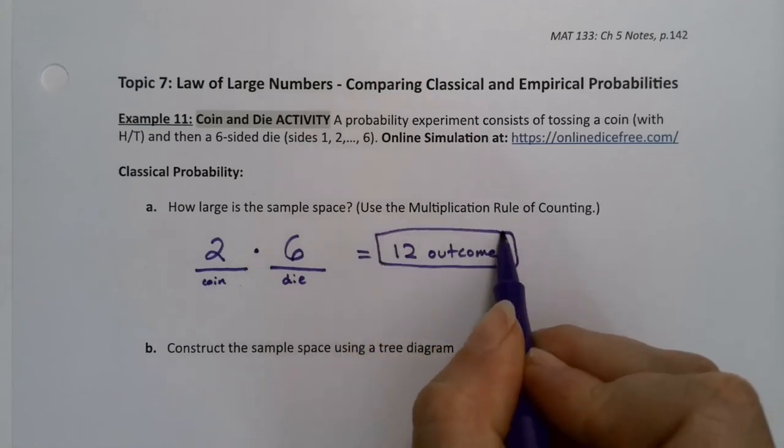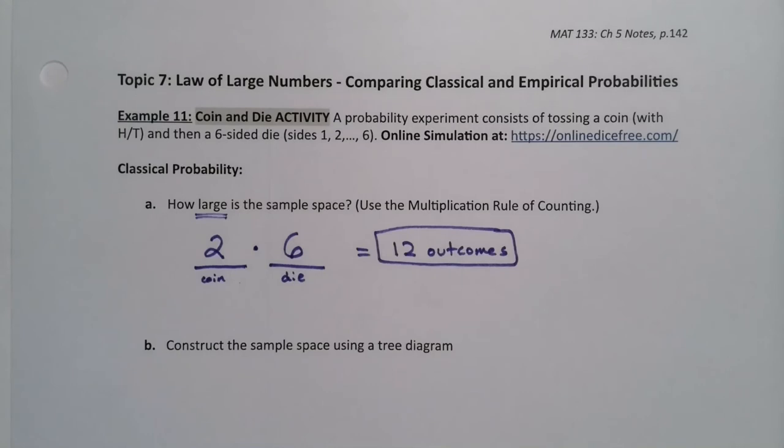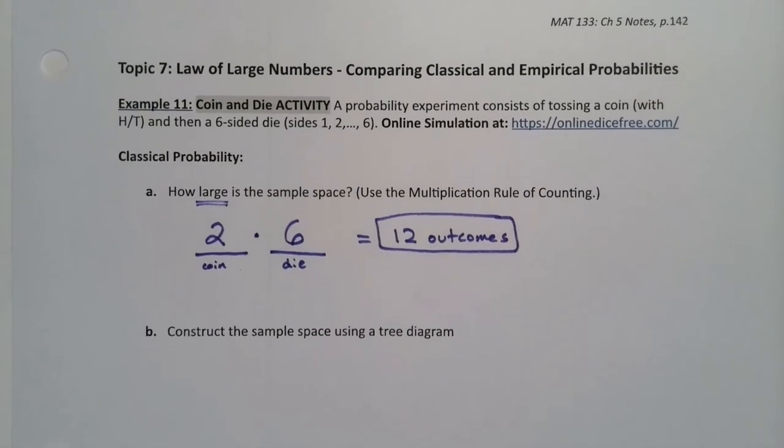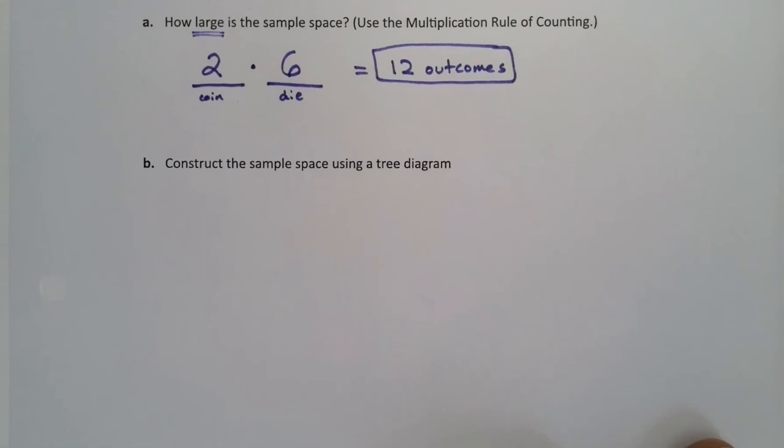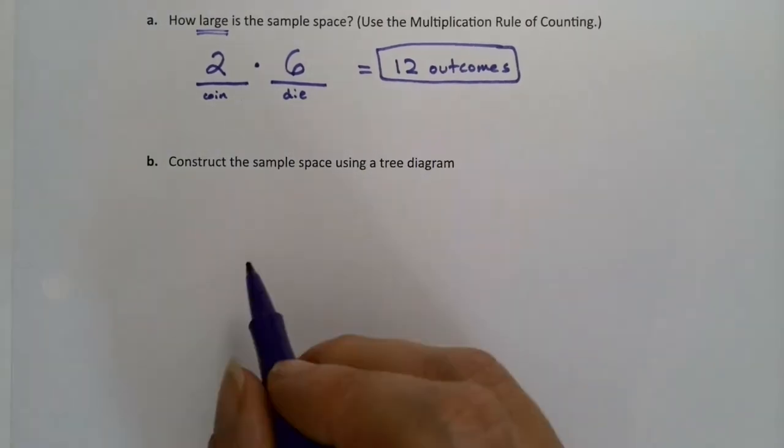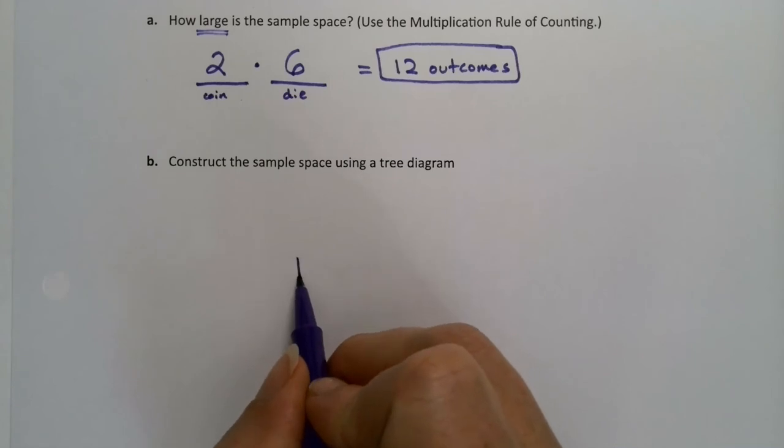That is the size of the sample space. How large is the sample space, which they asked. So now we're going to have to make a tree diagram from that sample space. So we reviewed multiplication rule of counting. That's not so large that we can't make a tree diagram out of it. So let's do it.